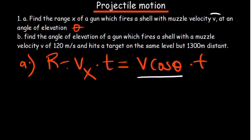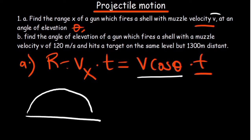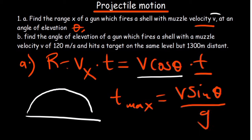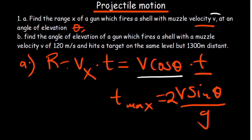The velocity in the X is V cosine theta. We've been given velocity V and angle theta, but not the time. The time we need is the total time of flight. Since the projectile path is symmetrical, the time to reach maximum height is V sine theta divided by G.